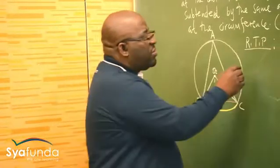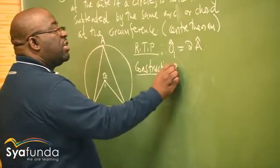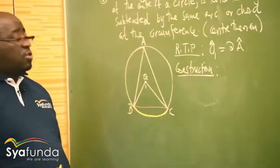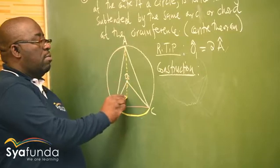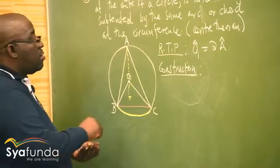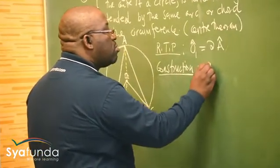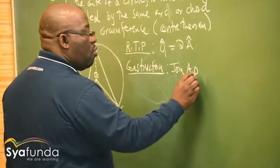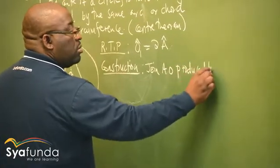Now we need our construction. Remember that your construction is always shown on dotted lines. The idea here is to split these two triangles by producing a line from A through O to point T. Construction: join A, O, produced to T.